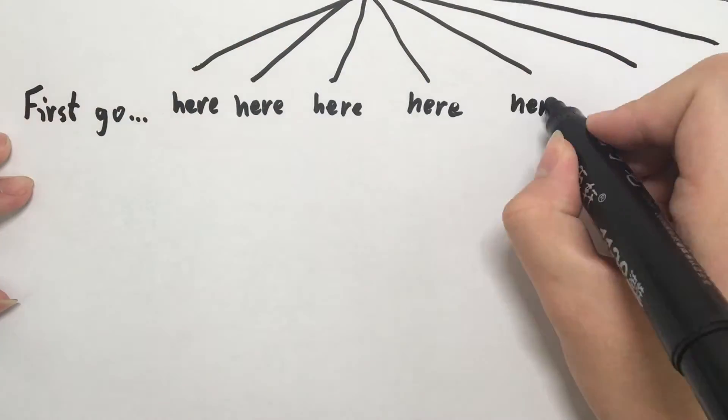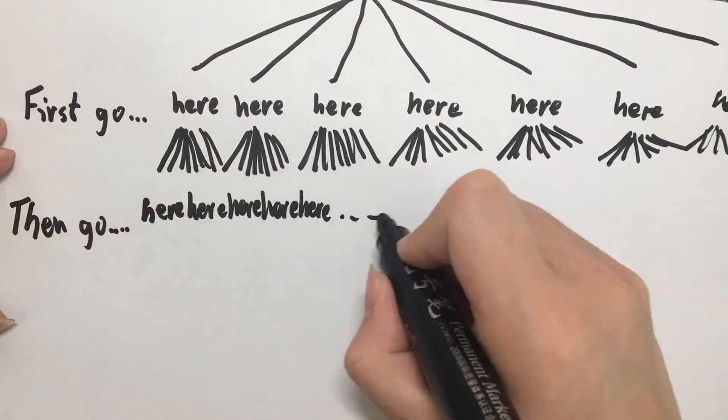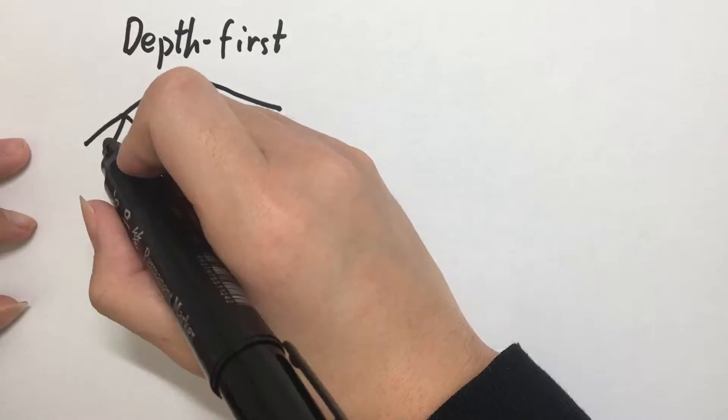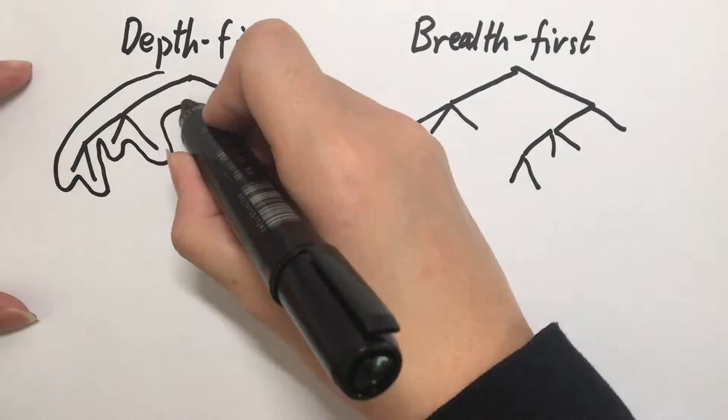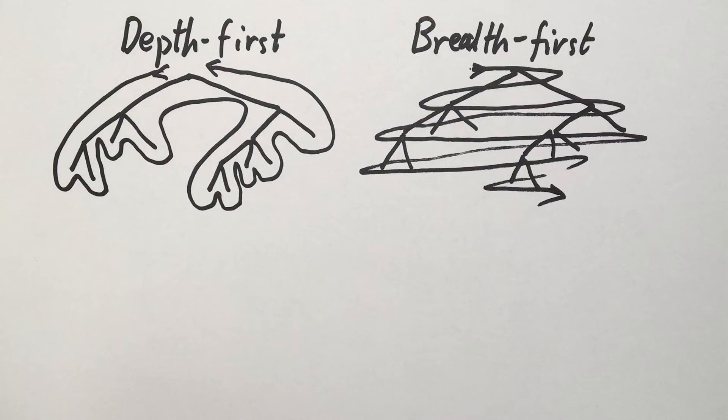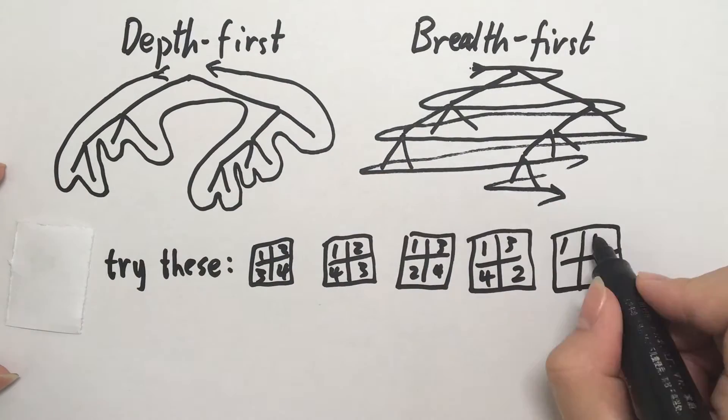AlphaGo uses a tree search to check every move it can make, and see which is better. The two simplest types of tree search are depth first and breadth first. So if AlphaGo uses a depth first or breadth first tree search on a 2x2 board, it would look something like this.